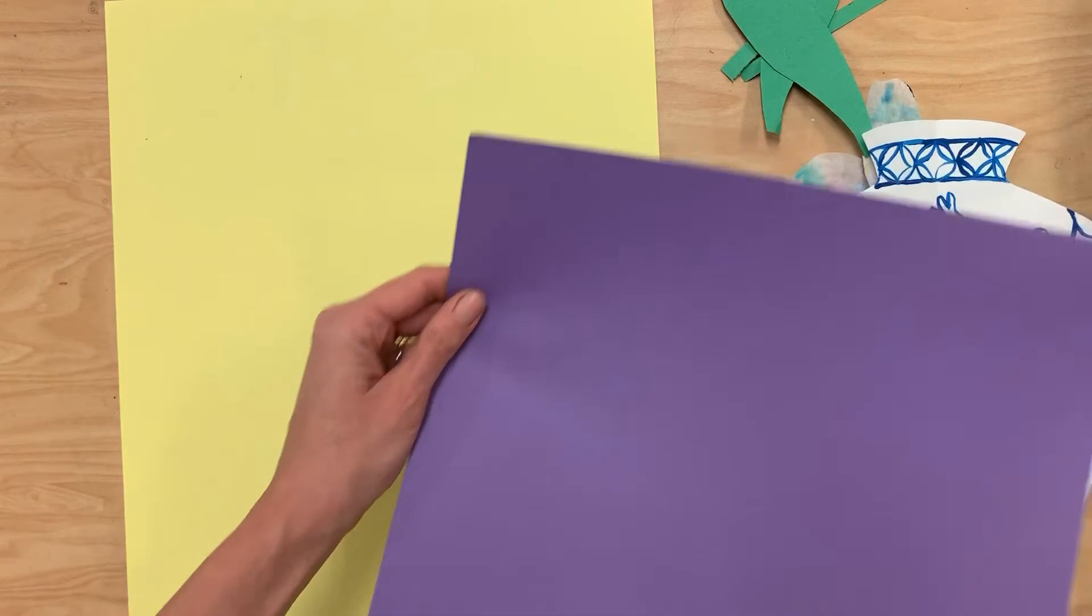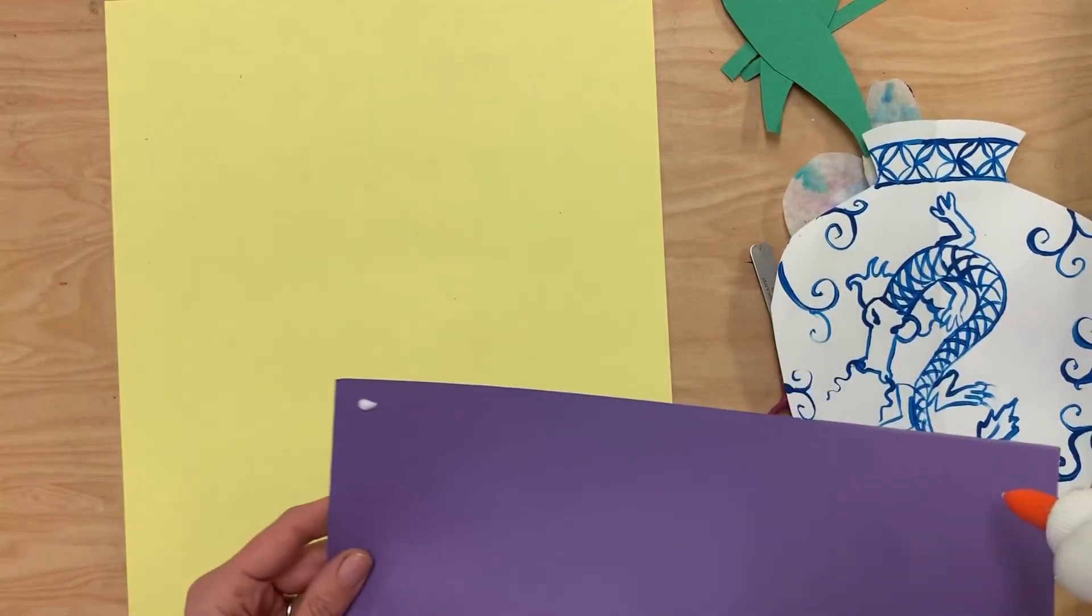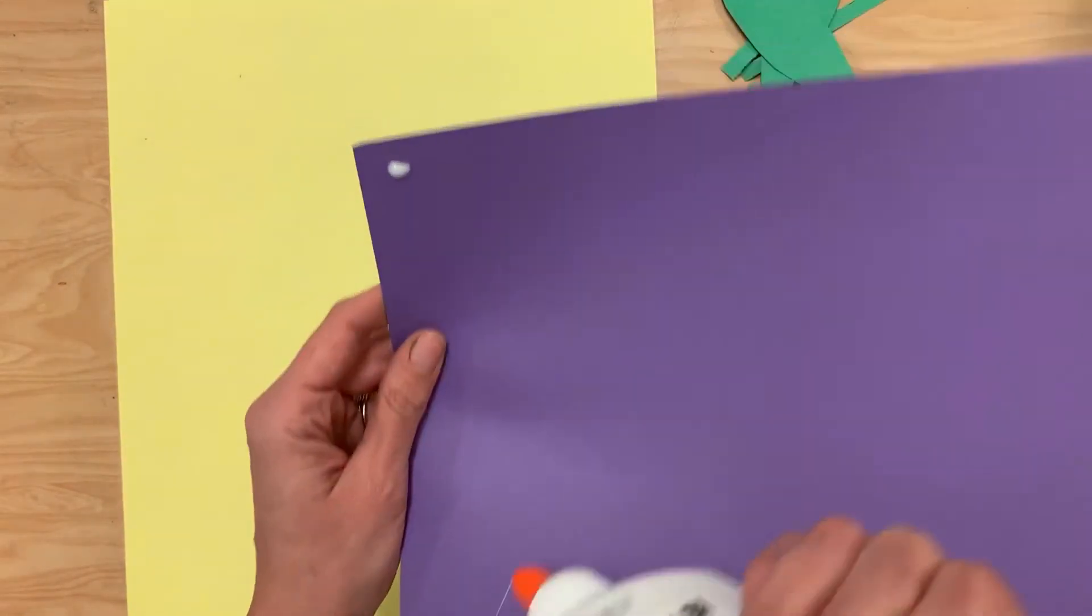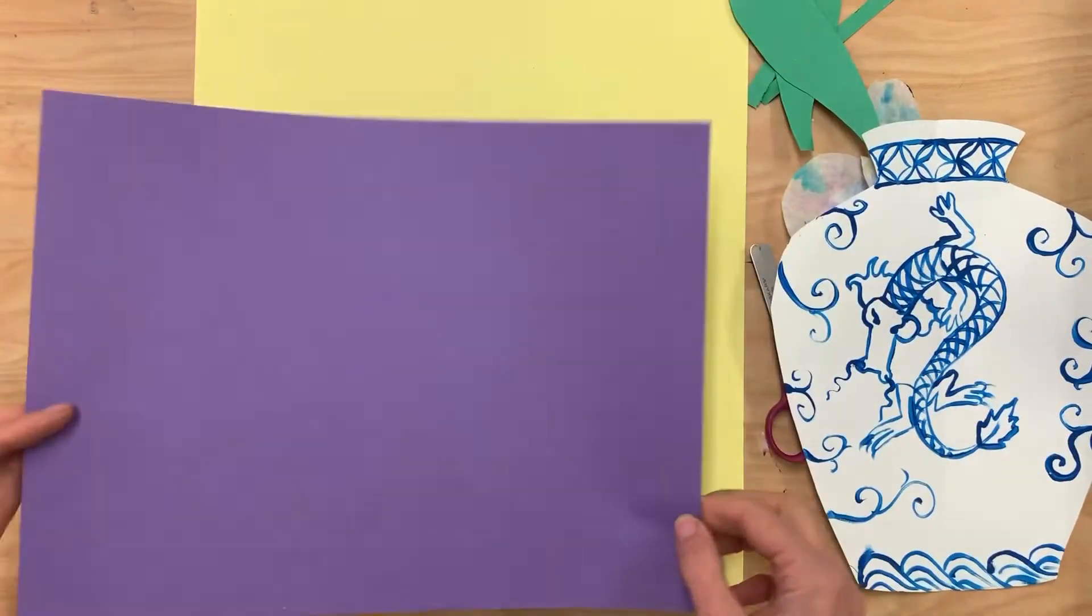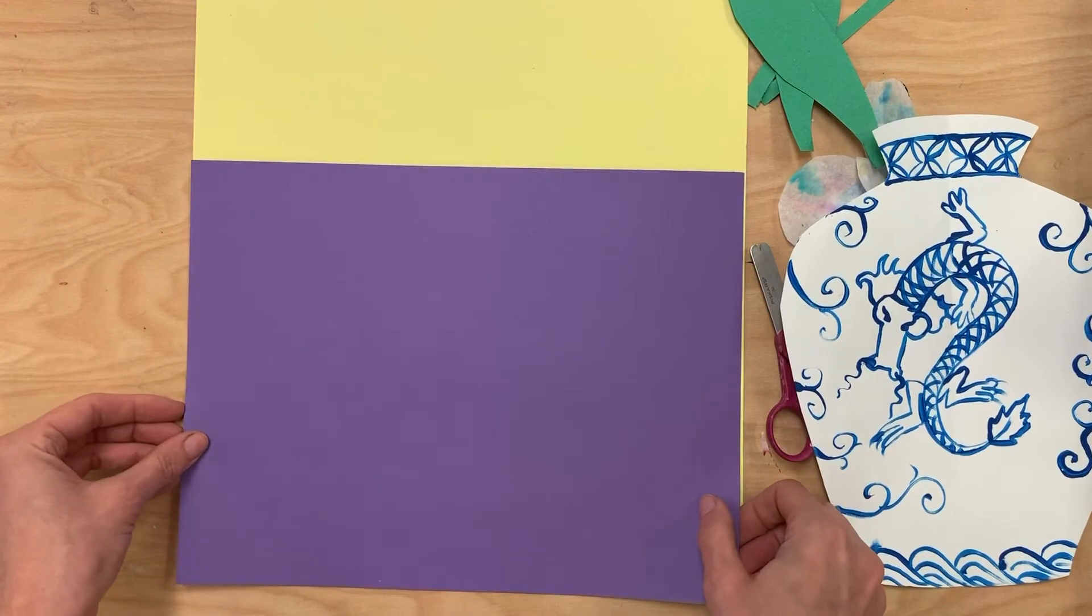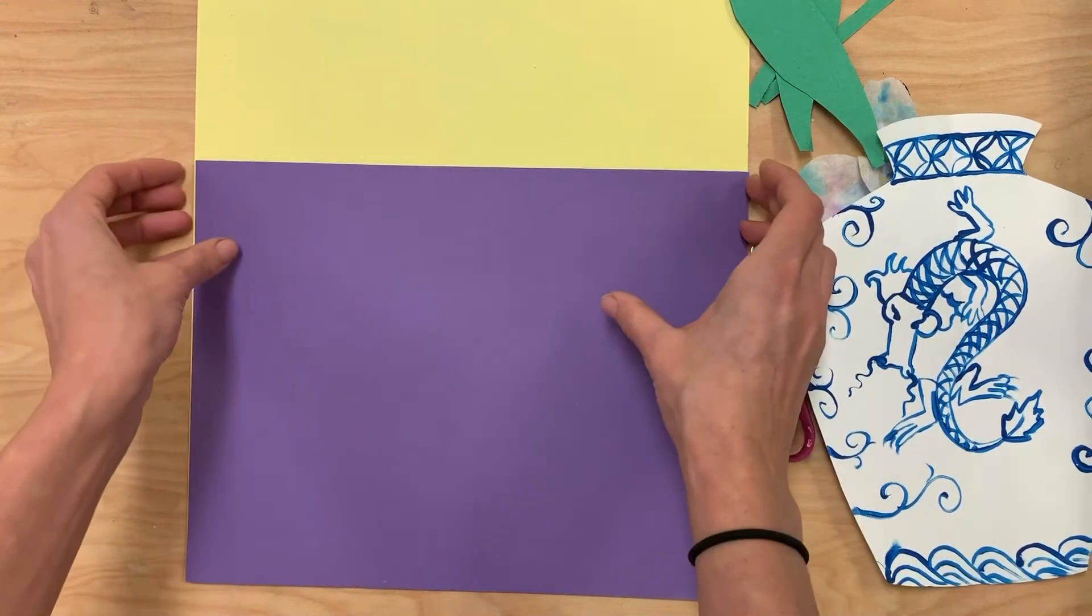I'm going to first create a tablecloth using a little 12 by 9 piece of paper and a few dots of glue. And then I'm going to stick this at the bottom of my paper here. Like this, so that it lines up evenly.